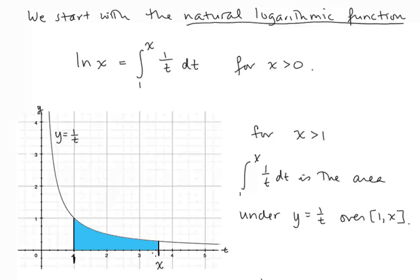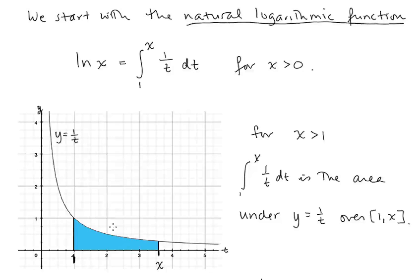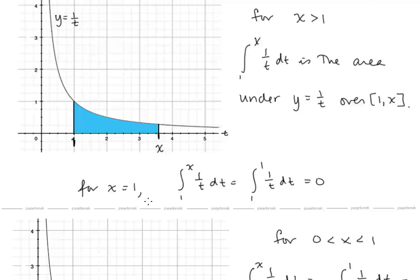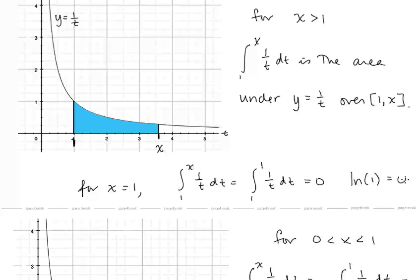Here's 1, here's x. Since x is greater than 1, we know it's on the right side of 1, and we're talking about this area here. That's what ln x gives us with this definition for x greater than 1. For x equal to 1, we're getting the integral from 1 to 1, and we know that when the bounds are equal, that integral is 0. So that says ln of 1 is equal to 0.